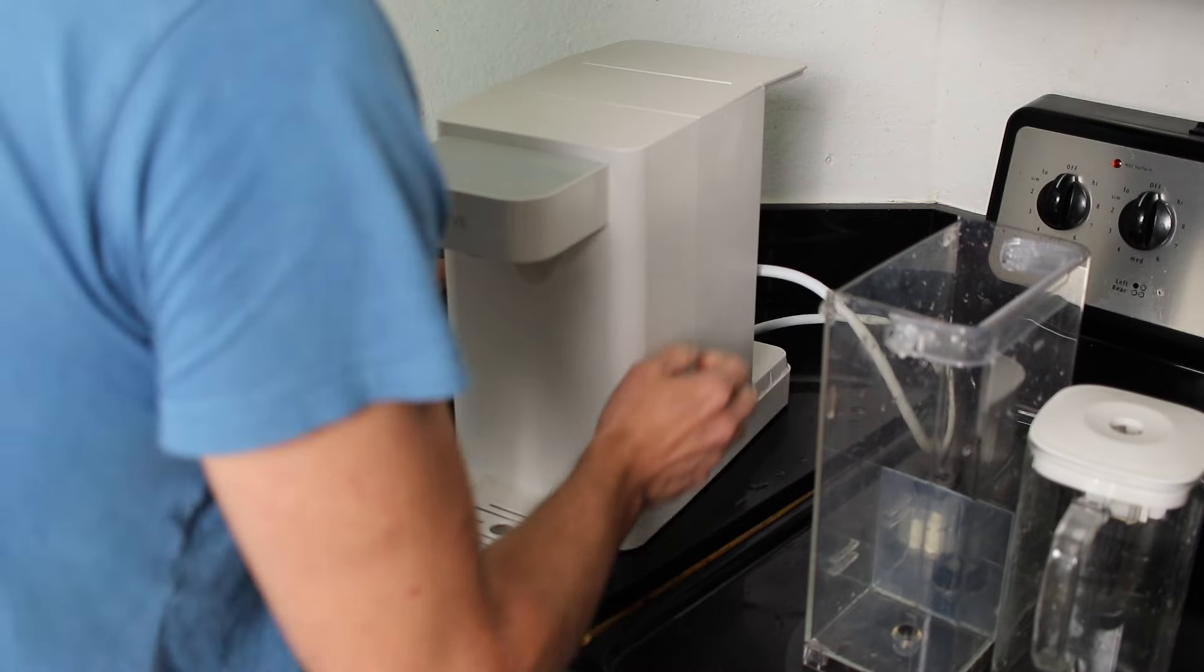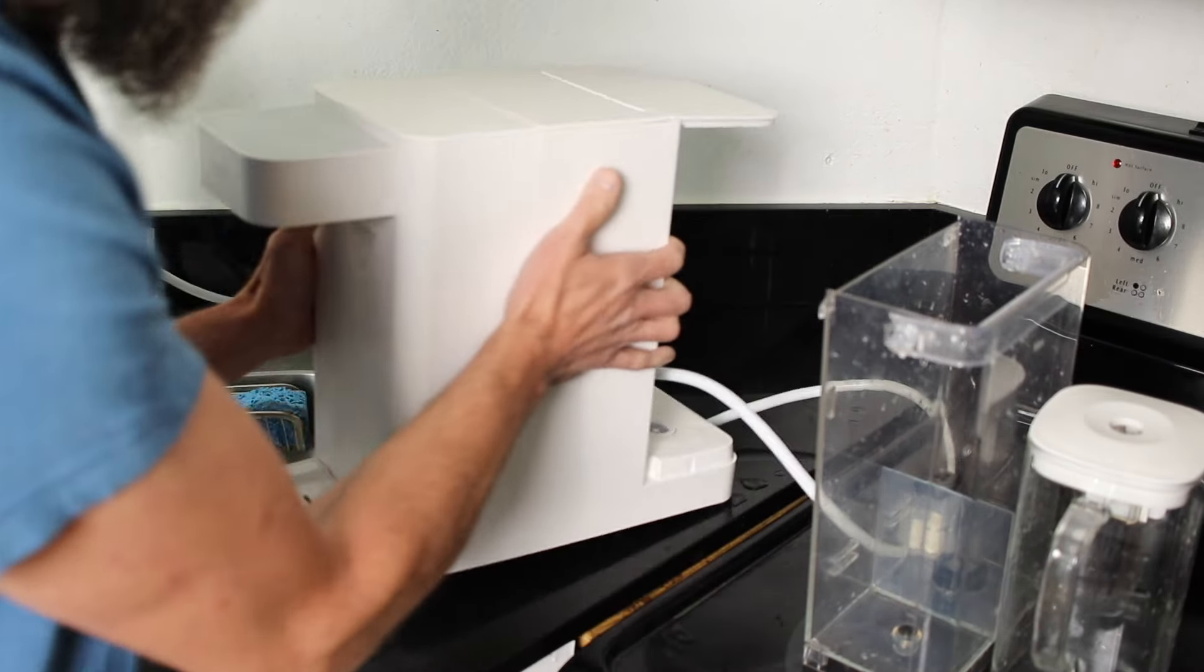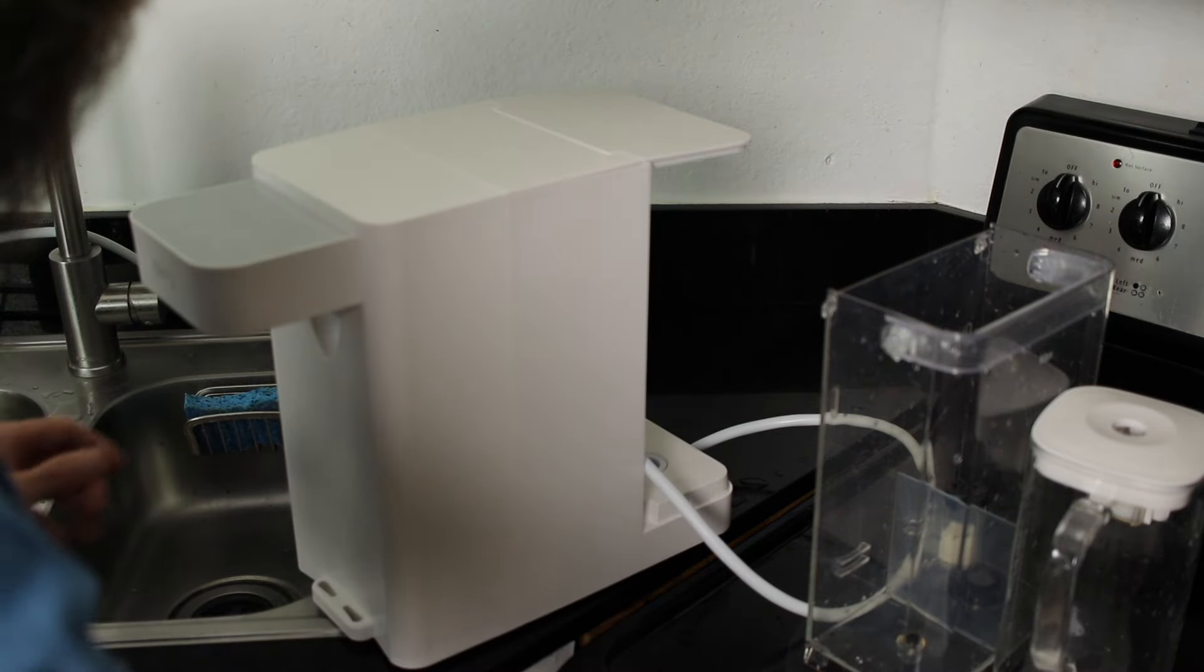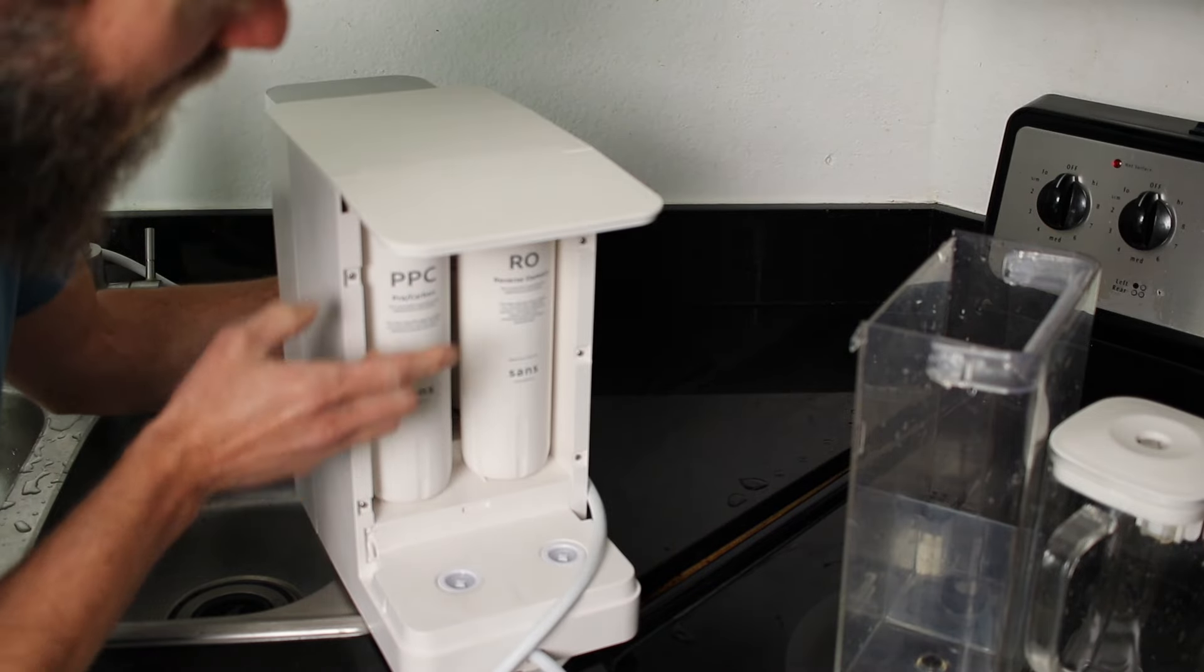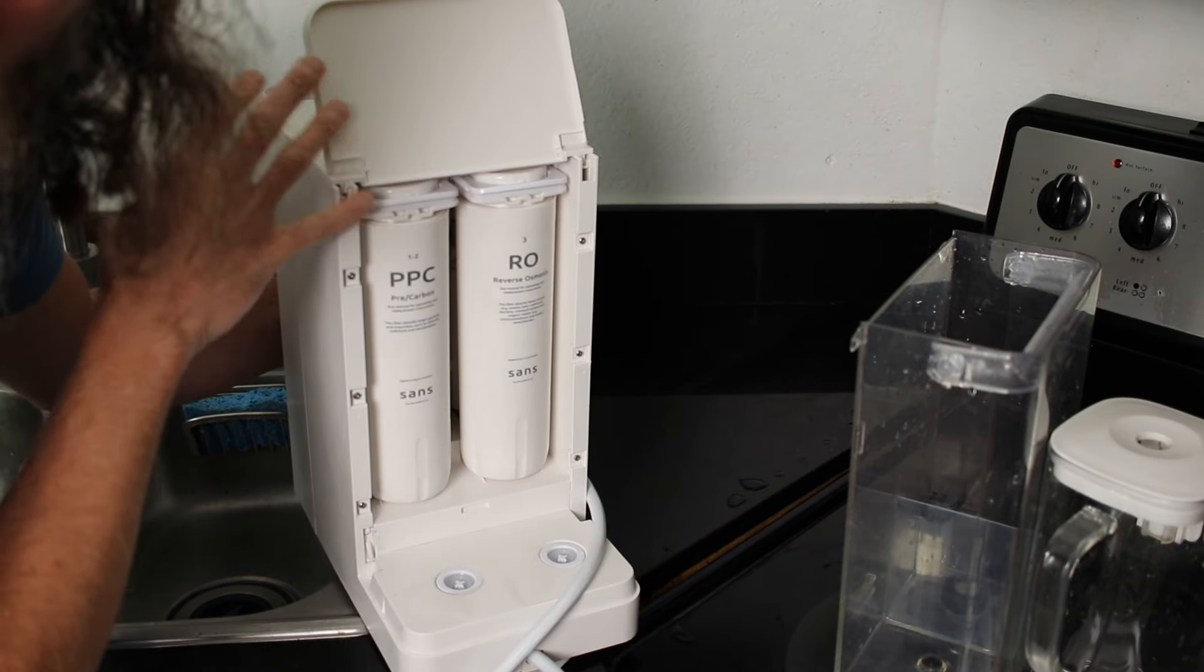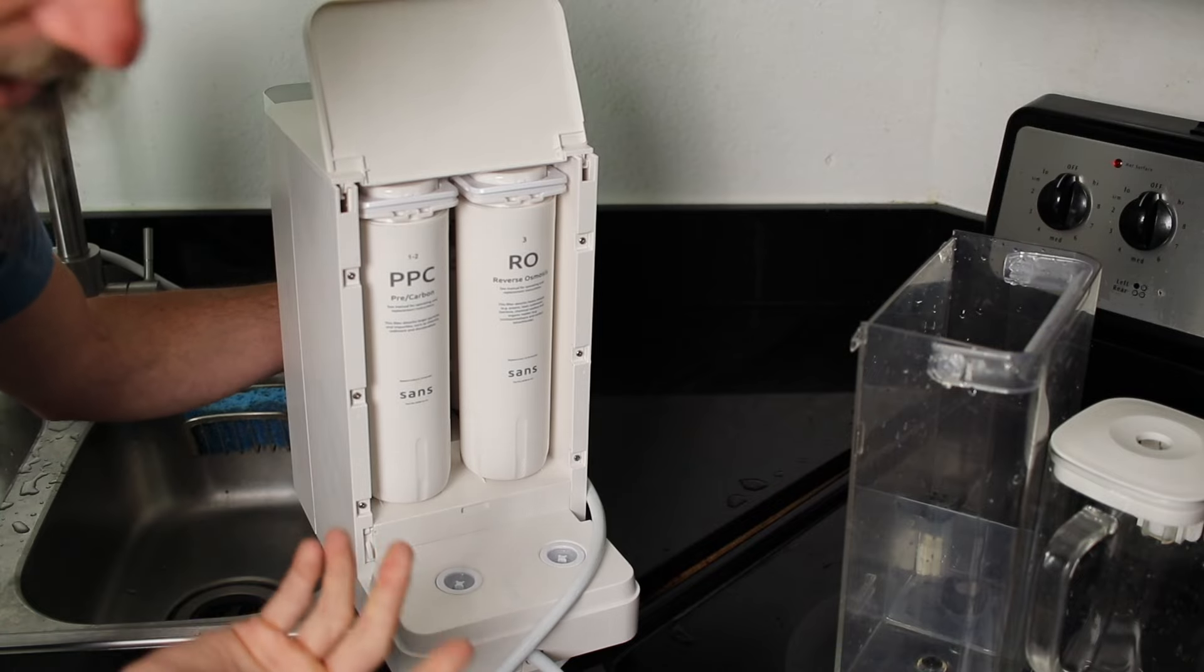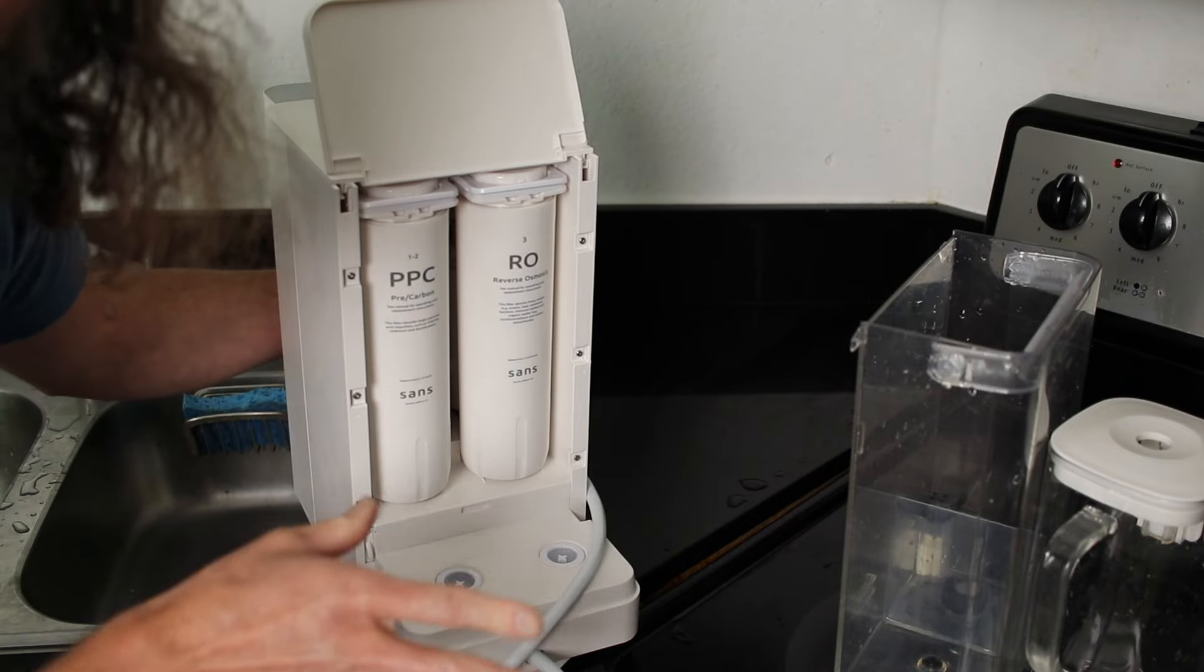So it also comes with two filters, but they were already pre-installed. It also comes with a drip tray as well that I already installed. But it has two filters back here. I don't know the ease of changing these out because I'm not going to be doing it, but these are supposed to be changed out when the light comes on. I think every three months, possibly a subscription. I just bought it as is without the subscription.